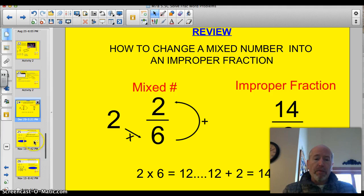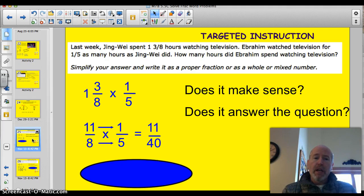Let's roll and try a couple of problems here, then I'll have you try 2 on your own. Last week, Jingwei spent 1 and 3 eighths hours watching television. Ibrahim watched television for 1 fifth as many hours as Jingwei did. How many hours did Ibrahim spend watching television? Make sure to simplify your answer and write it as a proper fraction. Let's get down to the basics here. What do we know? We know that Jingwei watched 1 and 3 eighths of an hour, and Ibrahim watched 1 fifth as many hours. So we're going to multiply 1 and 3 eighths times 1 fifth.